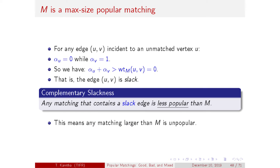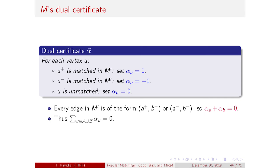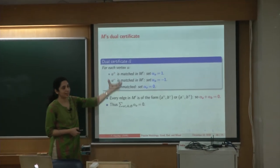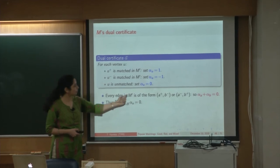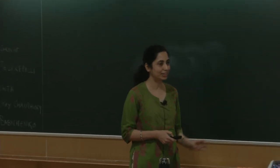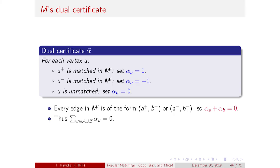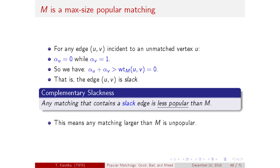This is a proof of correctness of our algorithm. The alpha assignment was defined directly from M' using Gale-Shapley — no optimization was needed. This is a linear time algorithm, essentially Gale-Shapley on twice as many edges. The certificate of popularity arose in the proof of correctness. This proves M is indeed a max size popular matching.